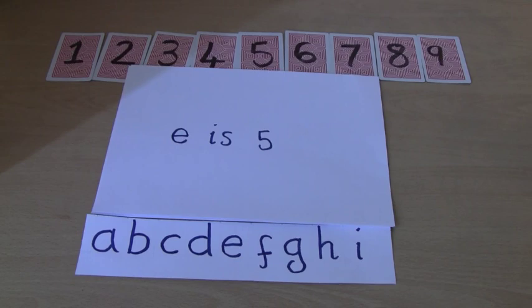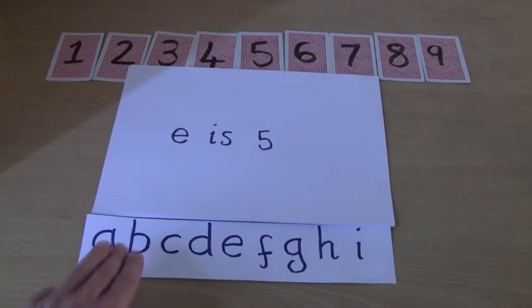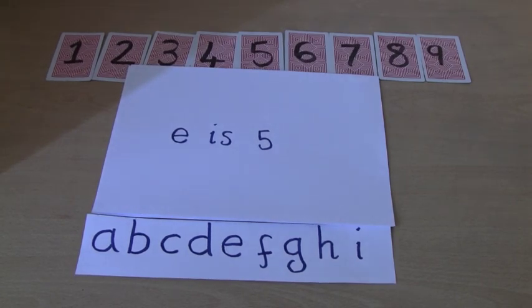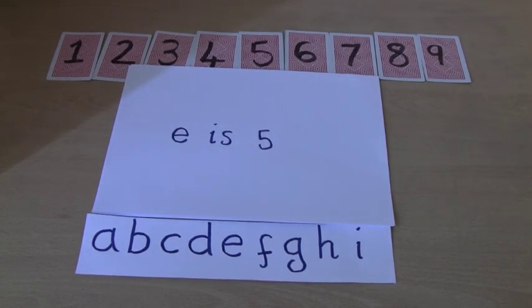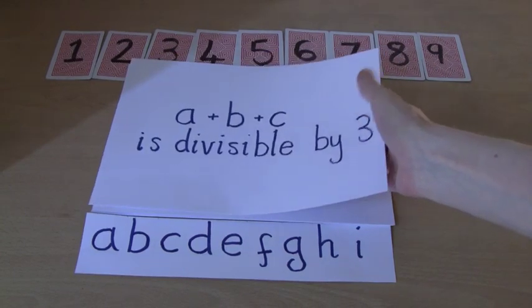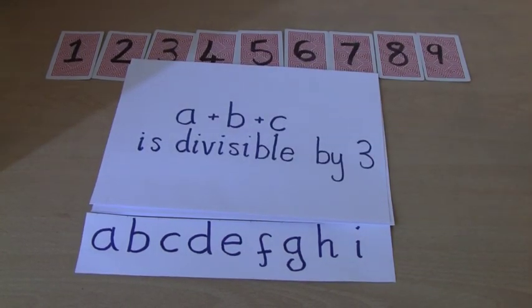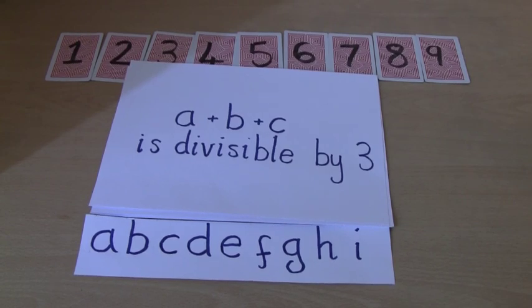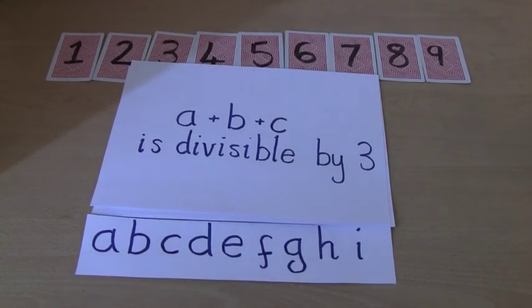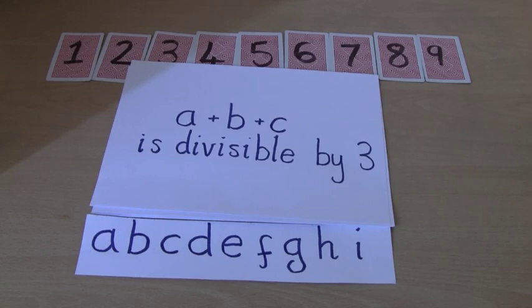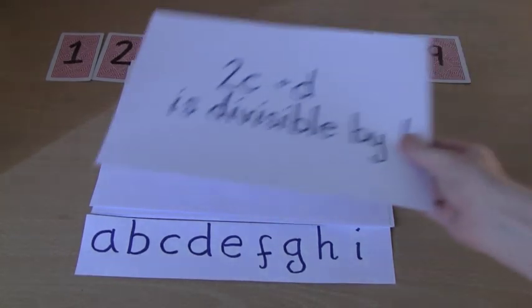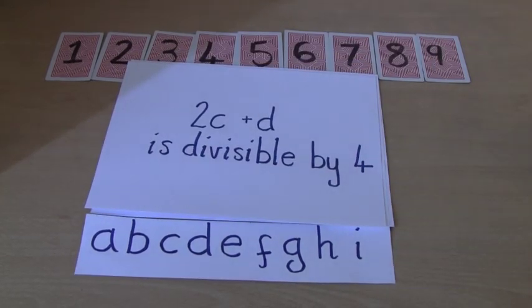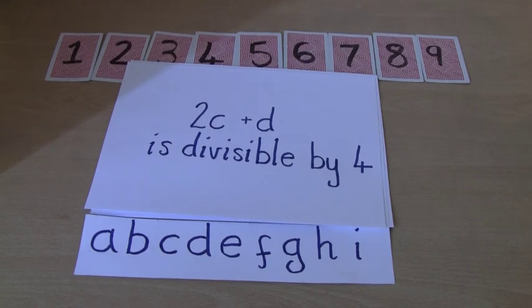But in the same vein, let's come up with some other conditions. We said the first 3 digits was a number divisible by 3. Well in that case, and this is a true fact, that means that A plus B plus C is divisible by 3. What other conditions can I come up with? The first 4 digit is a number divisible by 4. So, I can say that 2C plus D is divisible by 4.